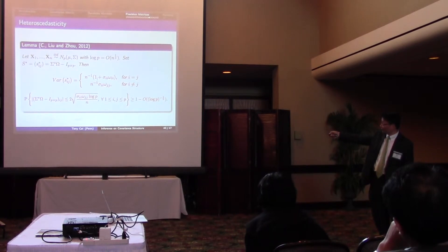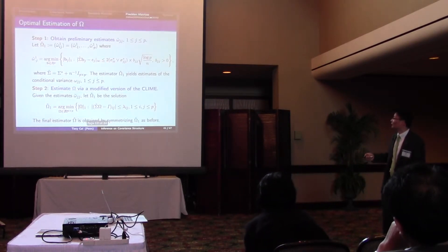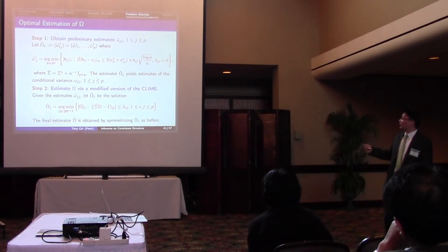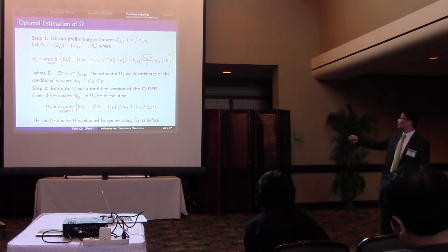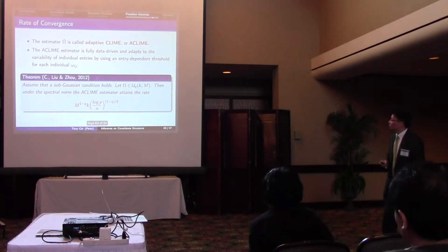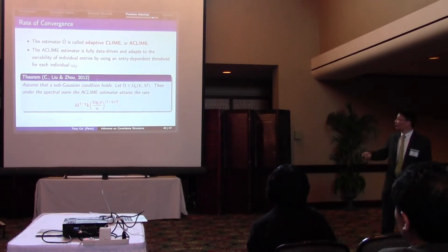we can adjust lambda ij according to what we have earlier here. Basically, we put in the estimated version here. And that's our lambda ij. And the final estimate is obtained by same symmetrization step. And it can be shown that this estimate, first of all, again,